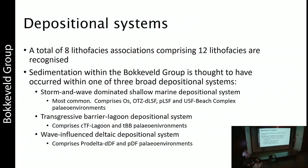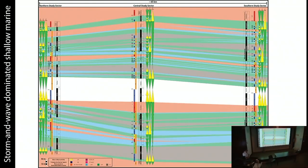I noticed there are eight lithofacies associations and 12 lithofacies in total, which we can group into larger depositional systems. Three comprise storm and wave-dominated shallow marine depositional systems, comprising offshore environments grading upwards into offshore transition zones, distal lower shoreface, proximal lower shoreface, and upper shoreface beach environments. There are also transgressive barrier lagoon depositional systems comprising channelized tidal flats, transgressively eroded by transgressive beach barrier environments, and wave-influenced deltaic depositional systems where we only see the pro-delta, distal delta front, and proximal delta front environments.